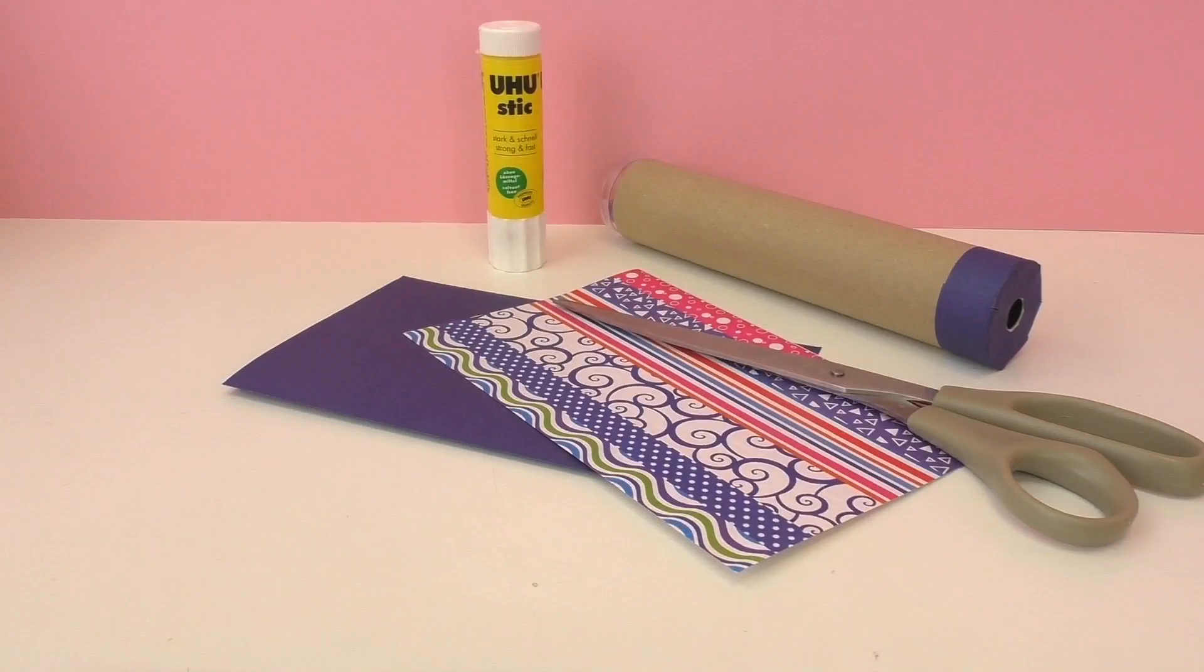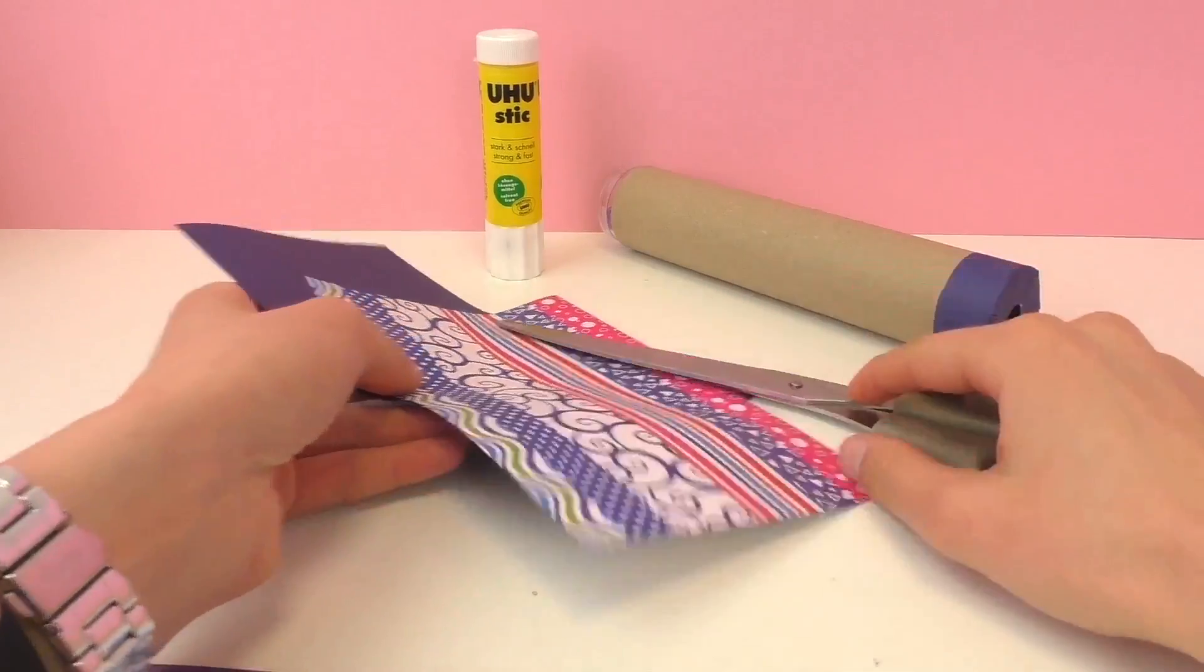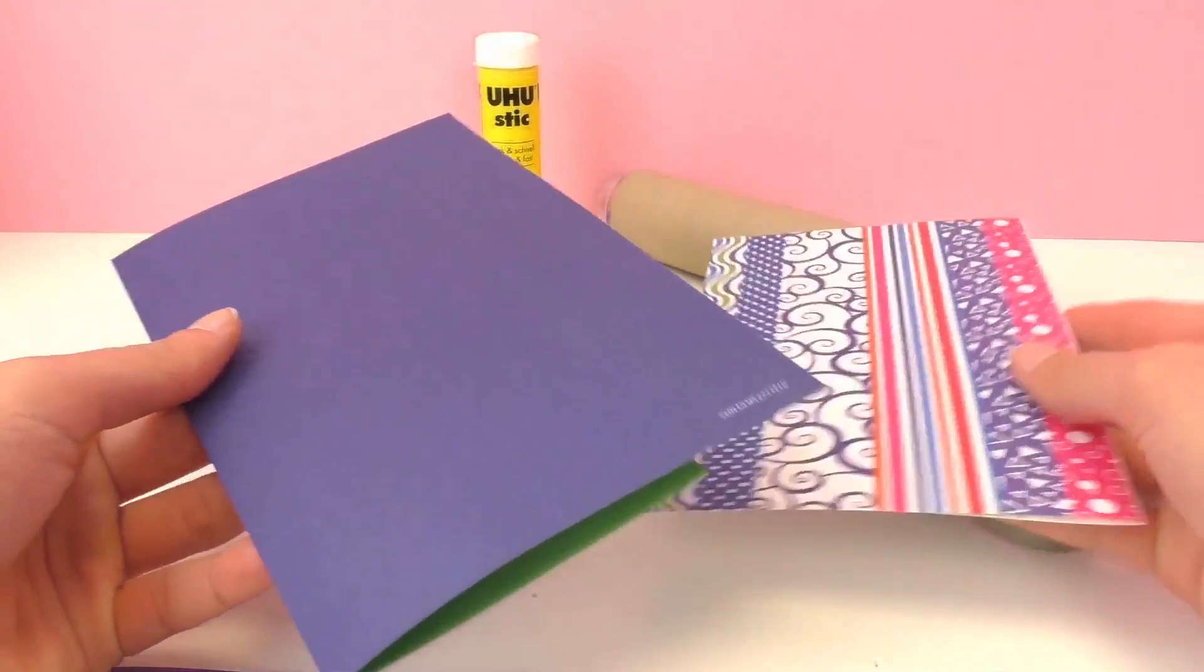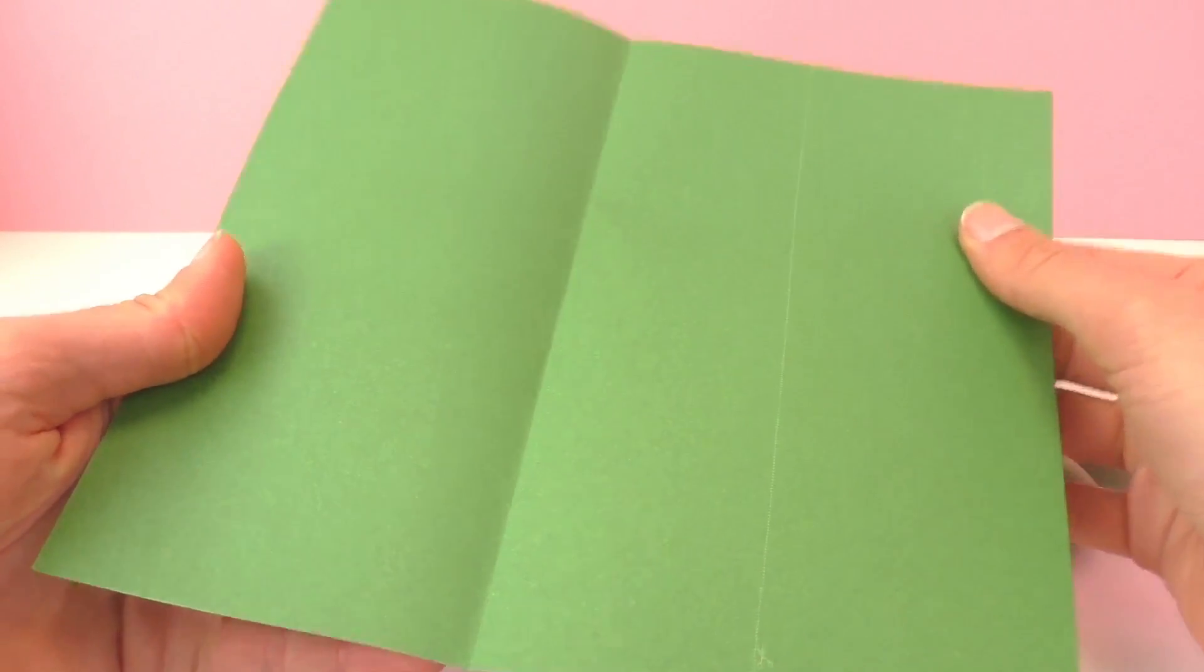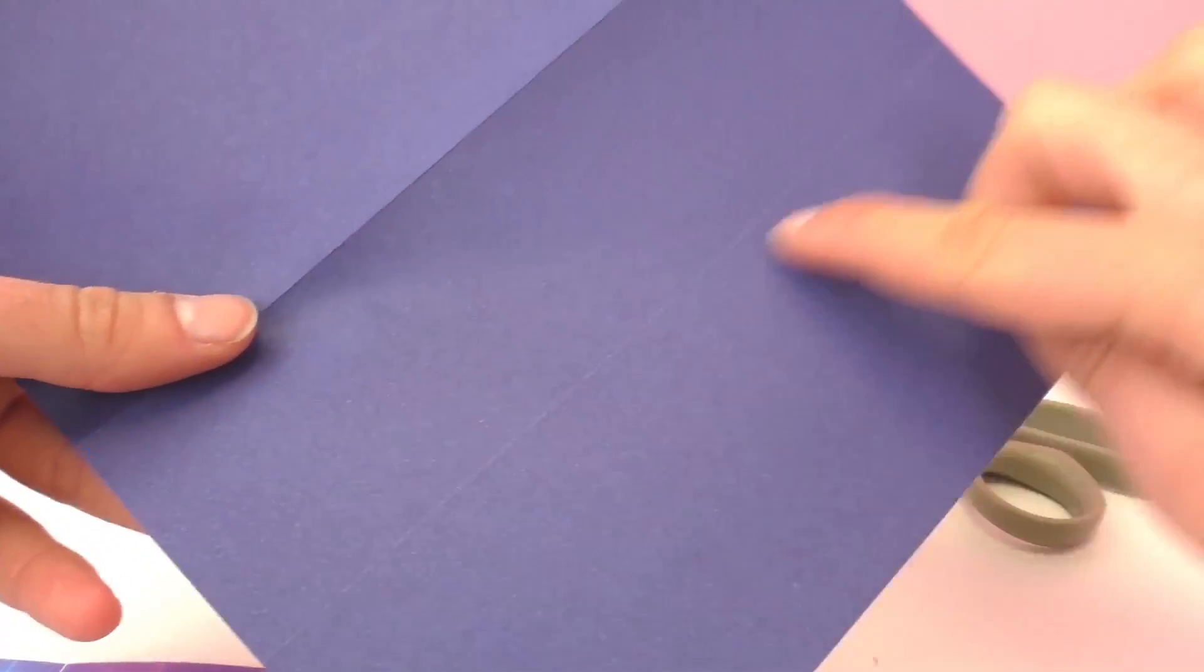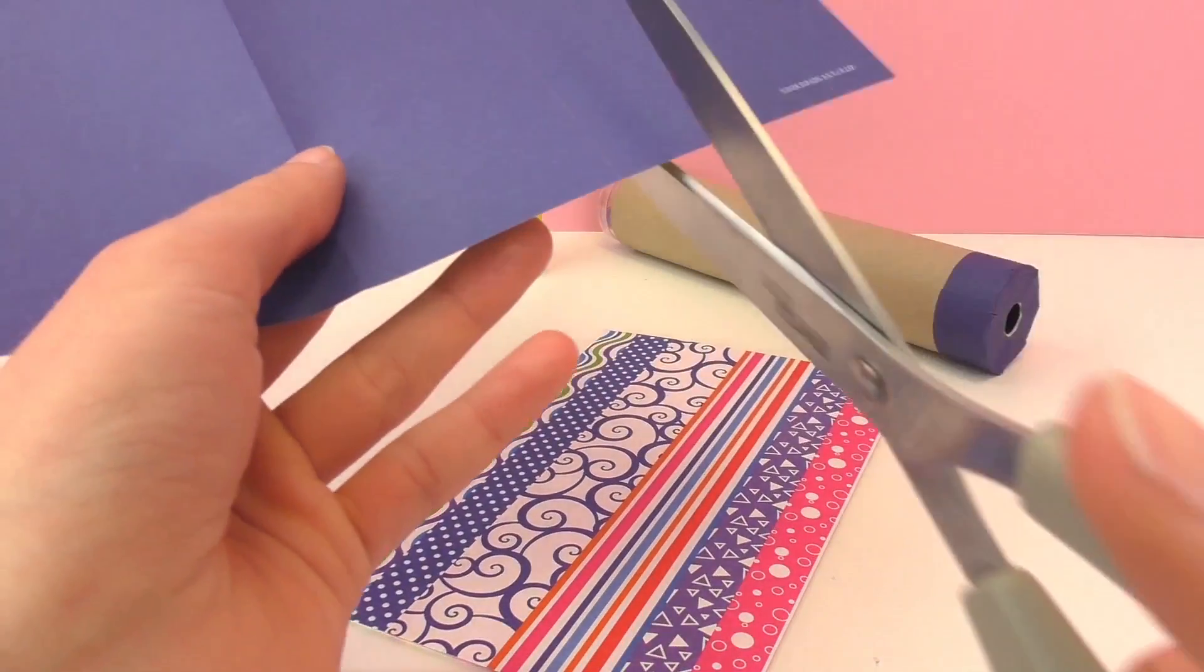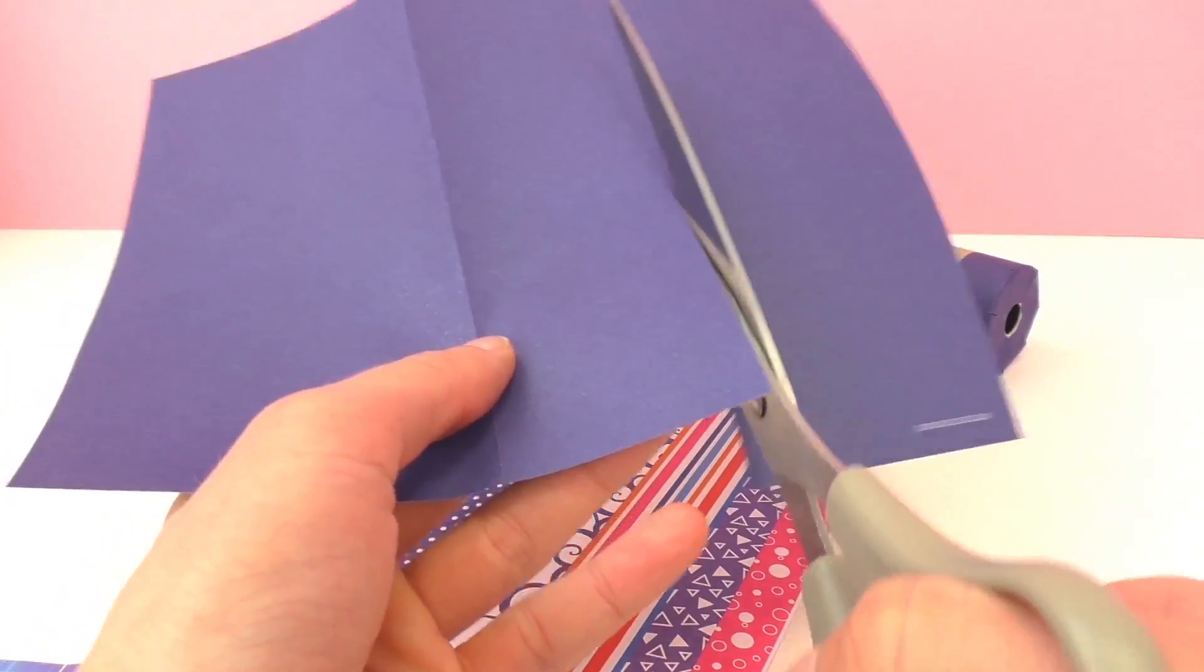Next up we're going to decorate the outside. For this we need some glue, scissors, the colored paper that comes with the kit, although you can also use your own paper and stickers. I think I'm going to make mine blue today. So go ahead and cut along the edge here and this is enough to cover the kaleidoscope.